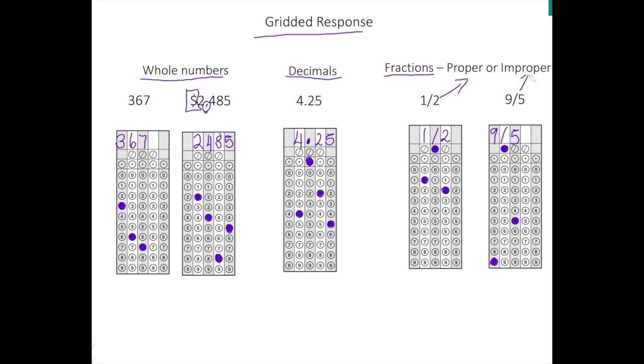Again you cannot input a mixed number. So suppose you did a problem and your answer turned out to be 1 and 4 fifths. You would have to convert that to an improper. So this cannot be placed in the grid. You cannot place a mixed fraction in the grid. It will be incorrect.